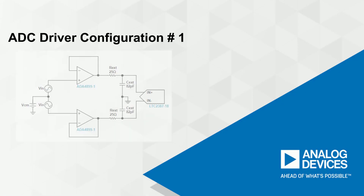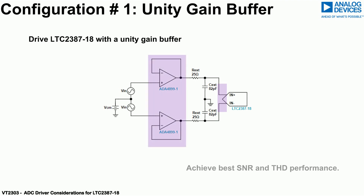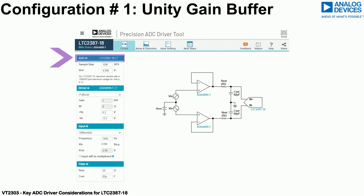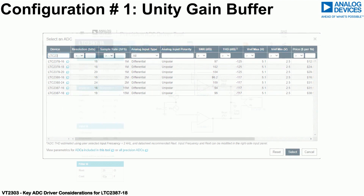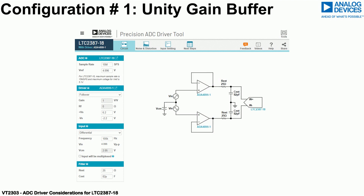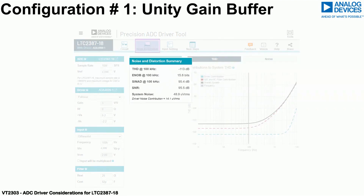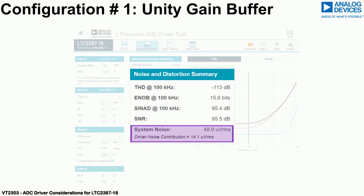To achieve the best noise and distortion performance from the LTC 2387-18, the first recommendation is to drive each analog input with a unity gain amplifier circuit. Selecting the LTC 2387-18 from the ADC menu automatically shows two ADA 4899-1 op-amps configured in unity gain. Looking at the noise and distortion performance tab, the distortion THD is minus 113 dB and the system noise is 48.9 microvolts RMS.